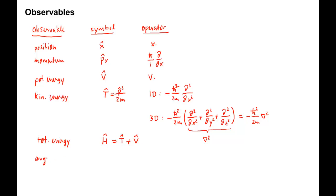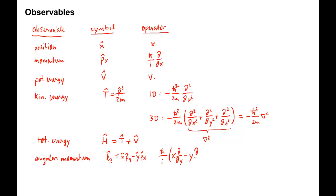There is also angular momentum. The symbol for the component around the z-axis is denoted lowercase l subscript z with a hat. It is given by x p_y minus y p_x. In explicit form, that's equal to h-bar over i times x d/dy minus y d/dx. The components around the x and y-axis have analogous expressions.